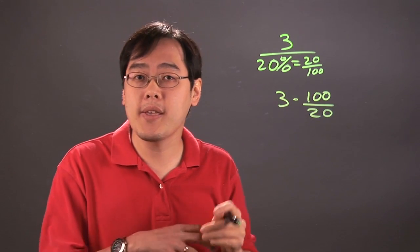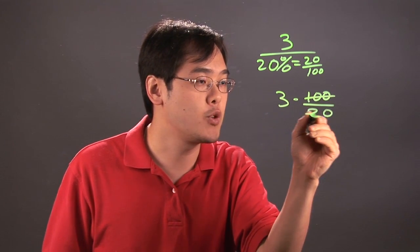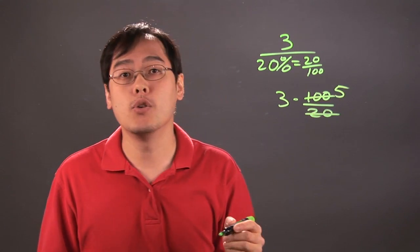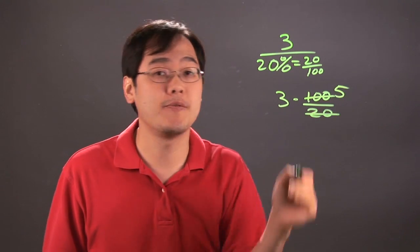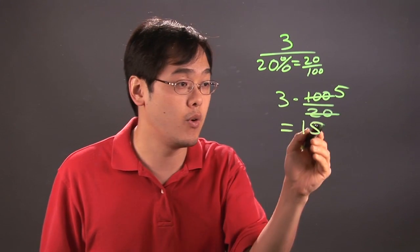From here, to make the multiplication a little bit easier, you may want to reduce. So 100 over 20 actually reduces to 5. So you're really multiplying 3 times 5 overall, so 3 times 5 is going to give you 15. It really is that straightforward.